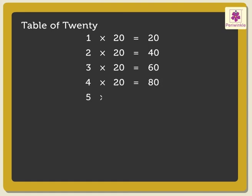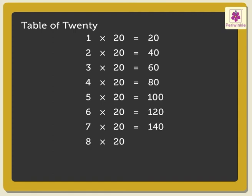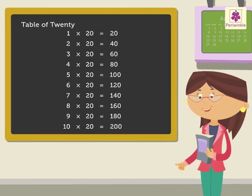5 × 20 are 100, 6 × 20 are 120, 7 × 20 are 140, 8 × 20 are 160, 9 × 20 are 180, 10 × 20 are 200. Hope you had fun learning the multiplication tables from 11 to 20!